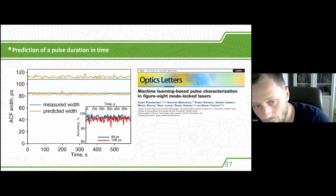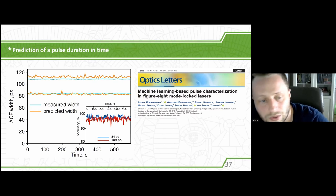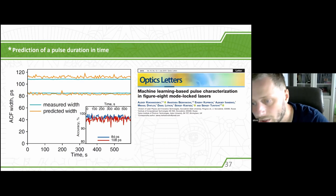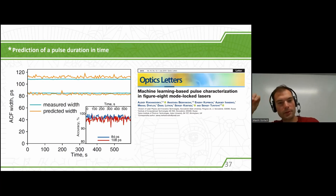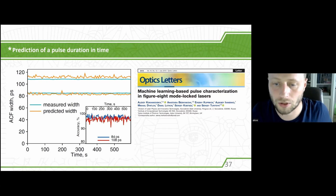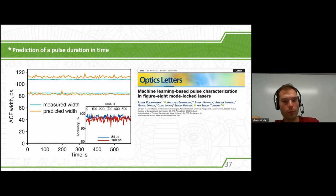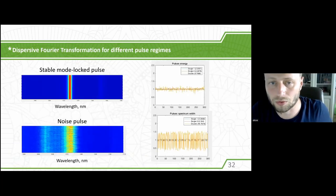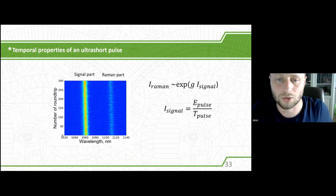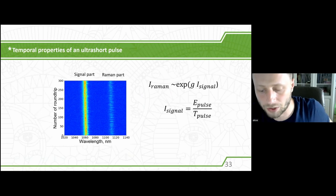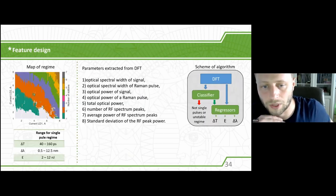We tried the experiment and it worked fine. After training the model and exploiting the laser, we succeeded in predicting the duration of pulses. The results will be published in Optics Letters. Yes, the experimental part is completely done by us — it is entirely experimental, with only signal processing applied to interpret the dispersive Fourier transformation data and create the model. There are no numerical calculations in terms of physical modeling.